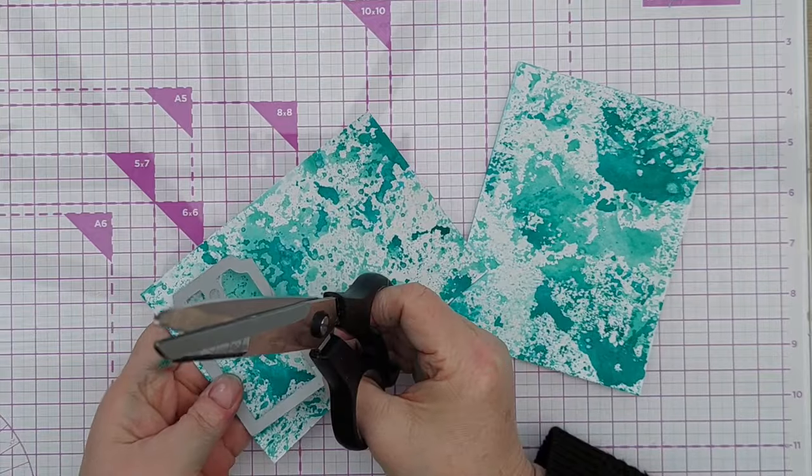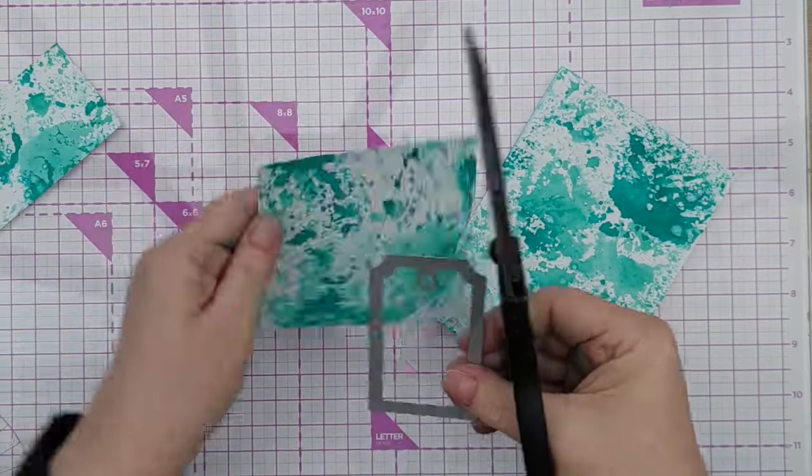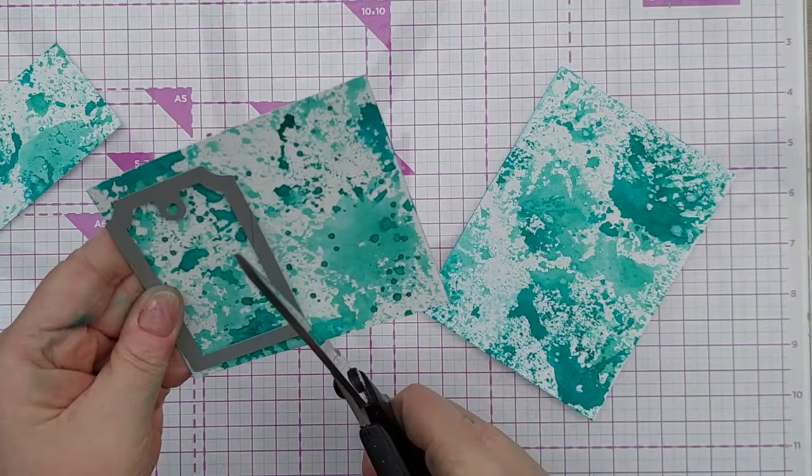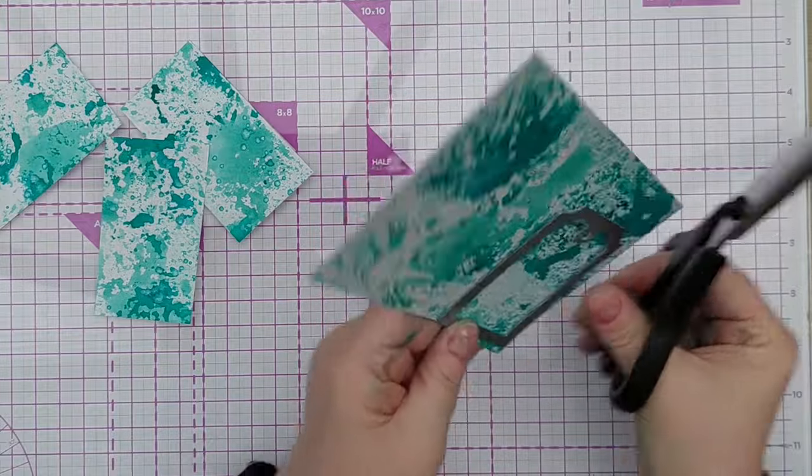Next I cut the pieces of paper up so that I could run them through my Gemini mini die cutting machine with the tag die, and I ended up with six tags.